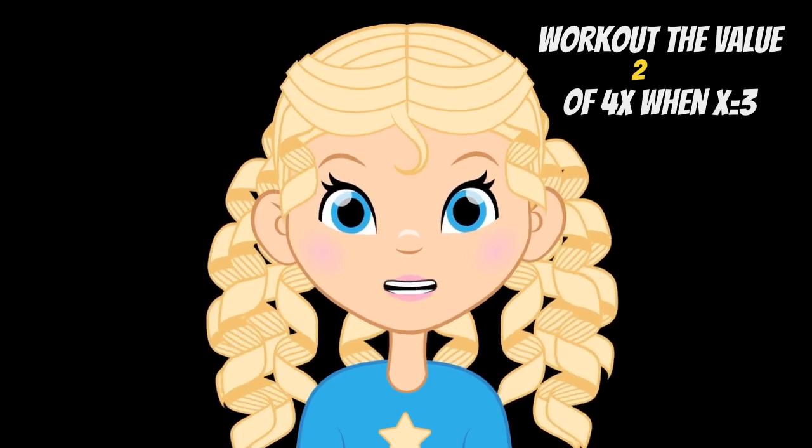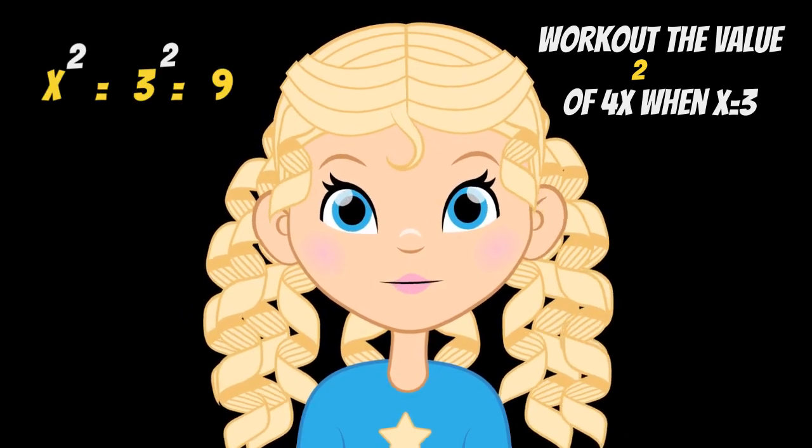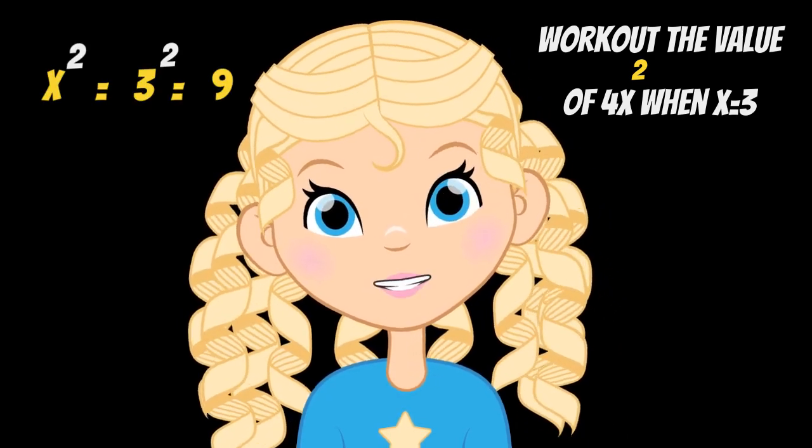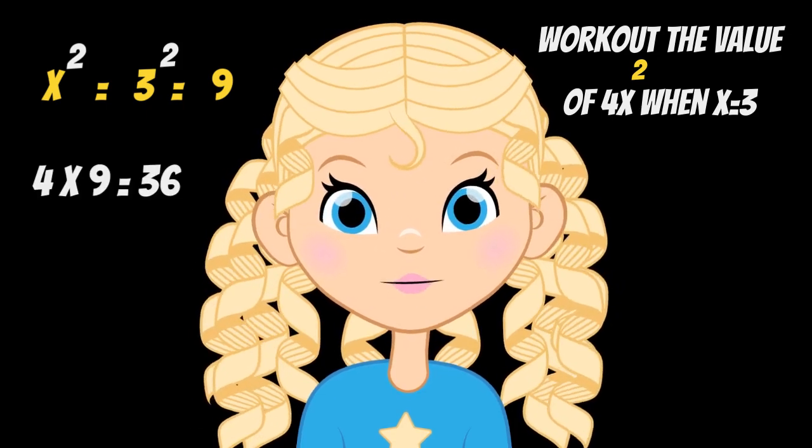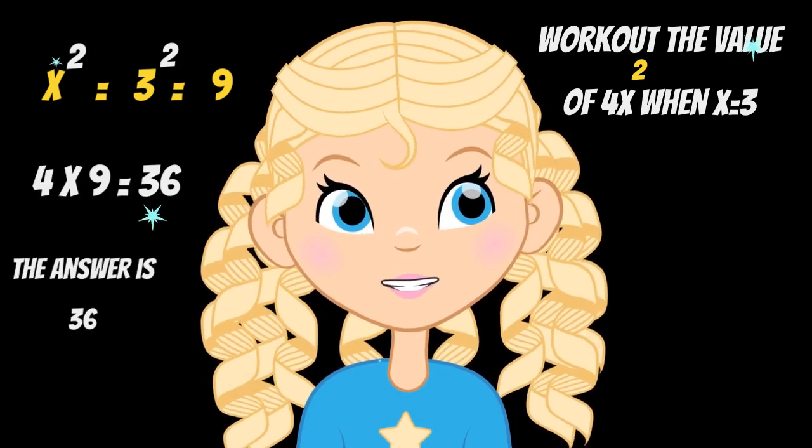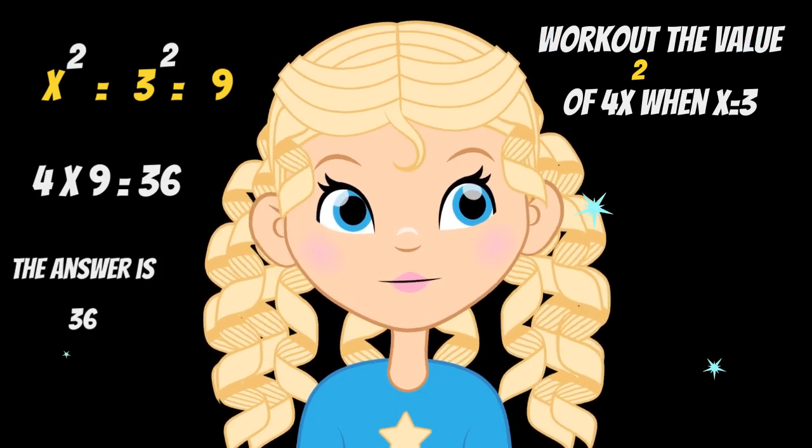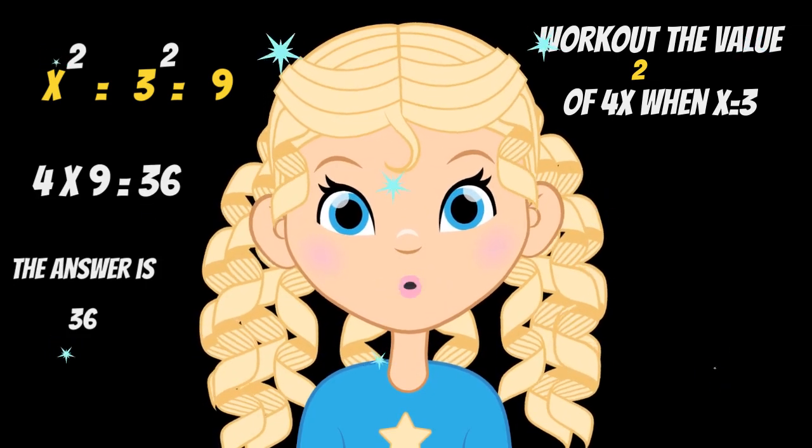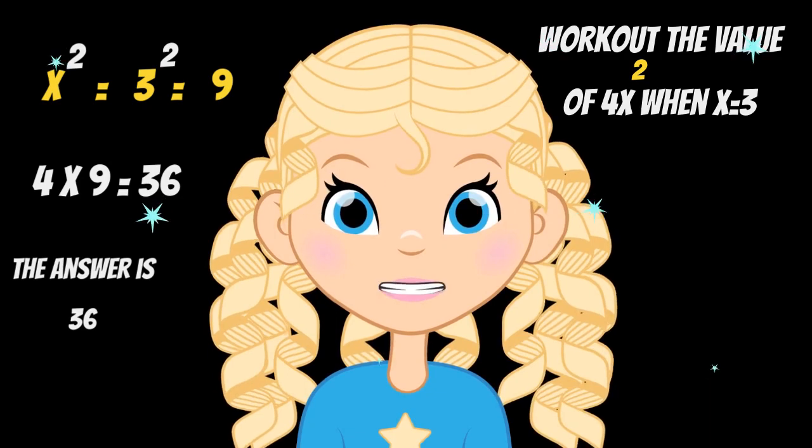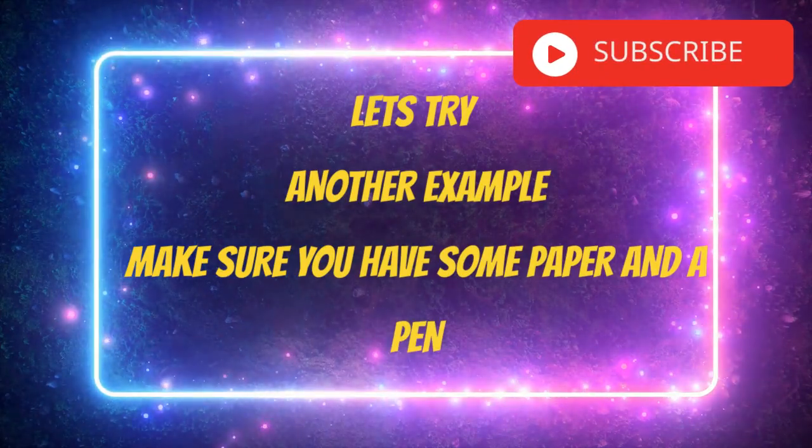And then I need to multiply that by 4, so I end up with 4 times by 9, which is 36. So 4x squared when x is equal to 3 is equal to 36.